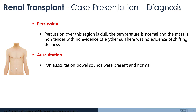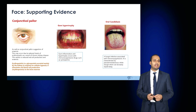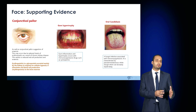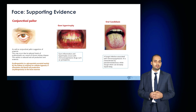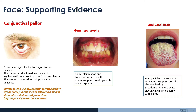Now try to discern why the patient developed renal failure, eliciting various clinical signs. Examine their conjunctiva and look for signs of anemia. Patients with chronic renal failure have reduced EPO levels and that can result in anemia. Look for signs of gum hypertrophy — this may be a consequence of immunosuppressant drugs such as cyclosporine. Look for signs of oral candidiasis; again, immunosuppressants will allow opportunistic infections such as candida to colonize the patient.